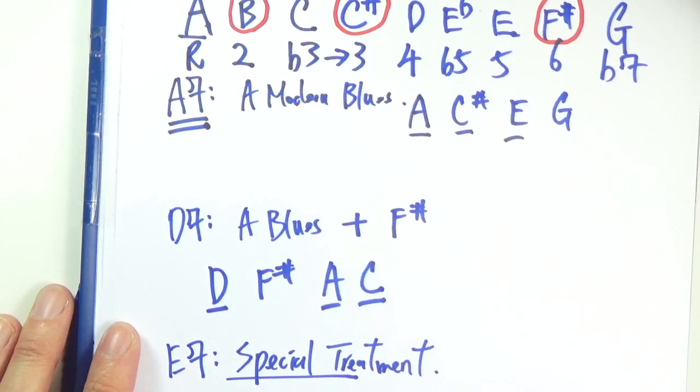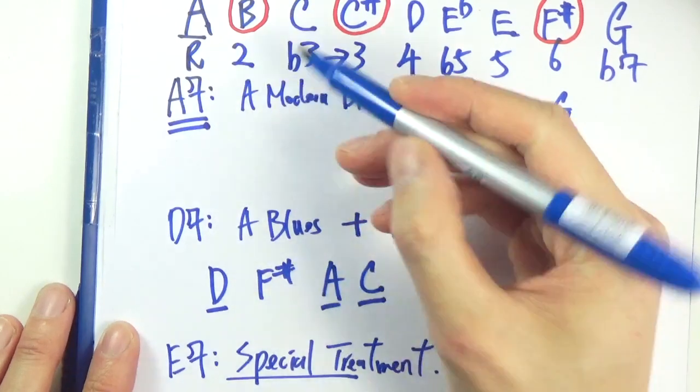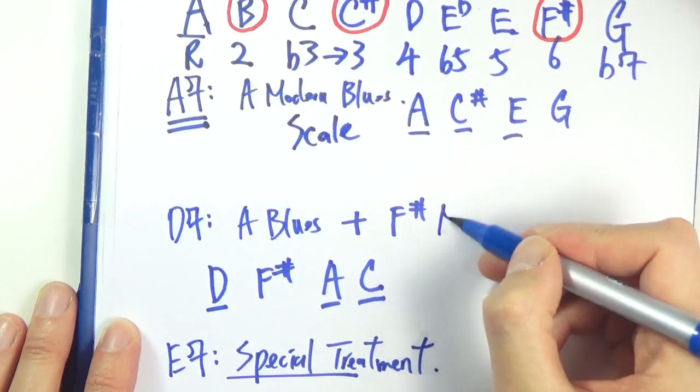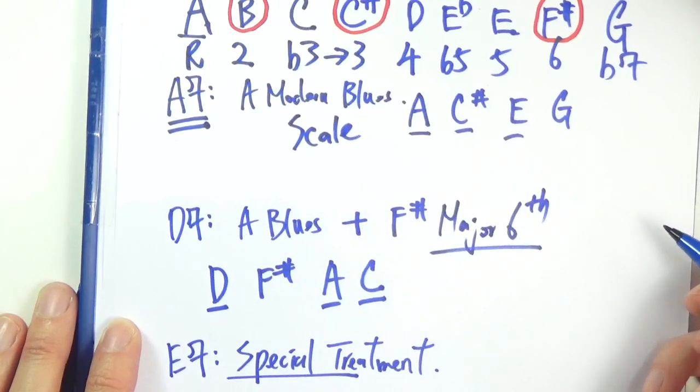So, so far, A7, we can play A modern blues scale. On the 4 chord, we play A blues plus F sharp, so that's major 6.